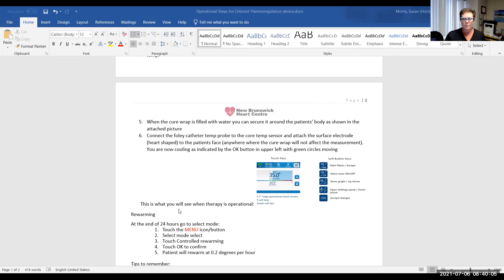When you want to rewarm the patient at the end of 24 hours, you're going to go up to that menu icon. You're going to go to select mode. You're going to hit control rewarming and then okay. And it will progressively increase your patient's temperature by 0.2 degrees per hour. Much simpler than our current process.